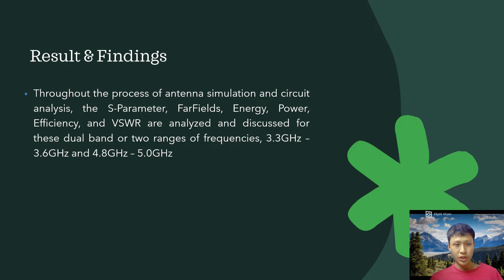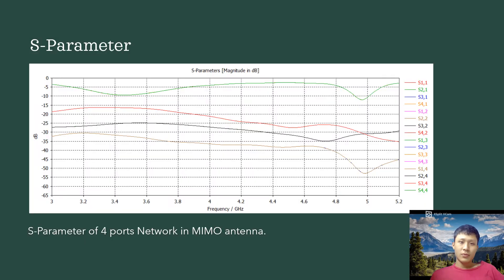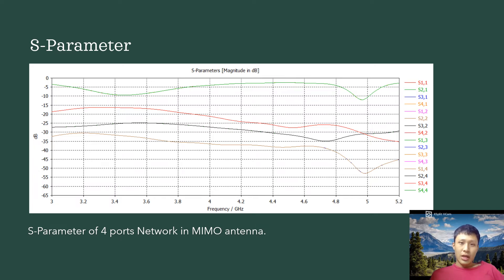From this process of antenna simulation and circuit analysis, we will display the S-Parameter, far field, energy power efficiency, and VSWR, which will discuss the two ranges of frequencies: 3.3 GHz to 3.6 GHz and 4.8 GHz to 5.0 GHz. The S-Parameter refers to the scattering parameters, which describes the relationship between the output ports of the antenna. There are four S-Parameters provided with the insertion loss, which is the model of Port 1, Port 2, Port 3, and Port 4.